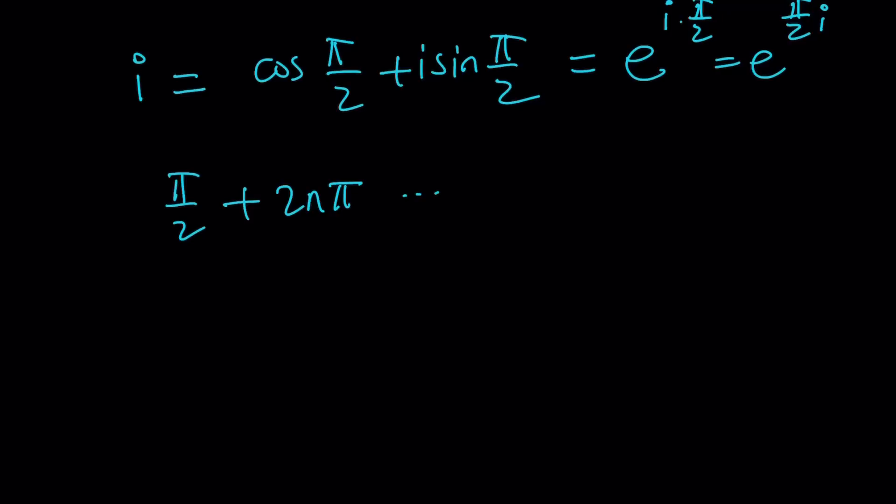So you can go ahead and write it in the general form or just look at the principal branch. It doesn't matter. I'm going to go ahead and give you the answer using the principal branch, but if you wanted to look at the general solution then you can always replace pi over 2 with pi over 2 plus 2n pi and you'll get the answer in general form.